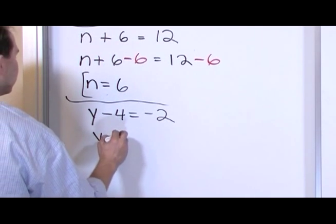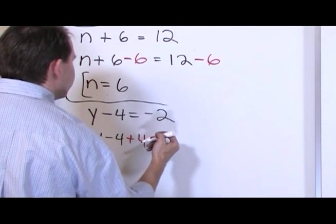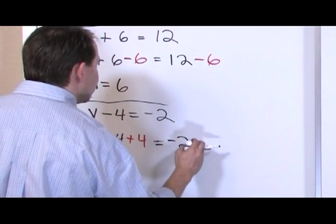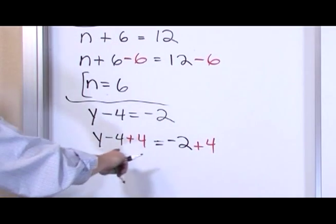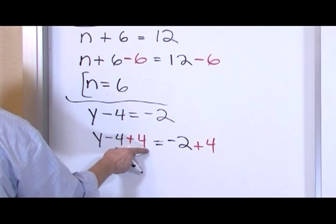y minus 4 plus 4 is equal to negative 2 plus 4. This equation is exactly the same as this one, I'm just adding 4 to both sides because I'm going to make this go to 0.